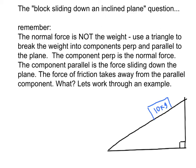And the component parallel will be the force that slides the block down the inclined plane. And then lastly, the force of friction. Friction takes away from this force, so that's pulling it down the plane whereas friction would be pulling it back up. Friction obviously wouldn't slide the block up the plane, but you know what I'm talking about.